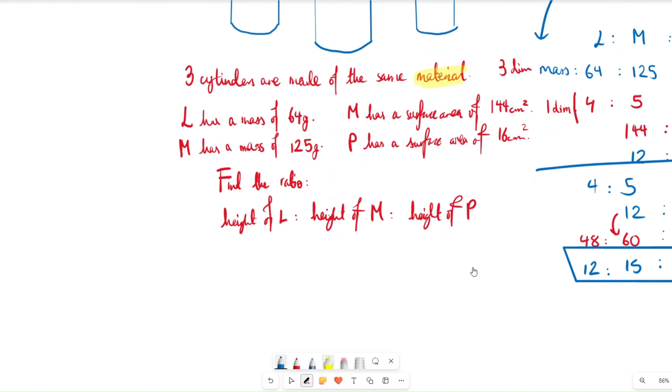I know you might be asking, it says the height, how can we work out the height? But when we're talking about height in terms of ratio and similar shapes, cylinders, and scale factors, we are thinking about our one dimension or two dimension or three dimension. Here we've got our one dimension, which is height. We've got our two dimension, which is surface area. And we've got our three dimension, which is our mass.